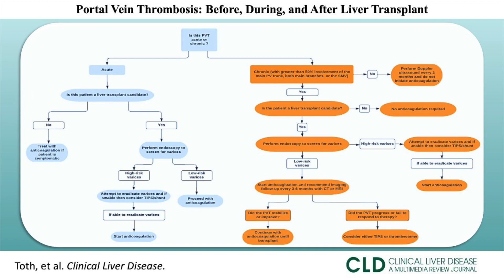Our diagram begins with determining if the PVT is acute versus chronic. If it is acute, the next question is to determine if the patient is a liver transplant candidate. Liver transplant candidates with acute PVT should undergo screening for varices. If high-risk varices are present, then patients should undergo TIPS with thrombectomy. If varices are successfully eradicated after TIPS, then the hepatologist should start anticoagulation. If low-risk varices are present, then anticoagulation should be started immediately to prevent progression of PVT. Note that acute PVTs are significantly less common than chronic PVTs in patients with cirrhosis.